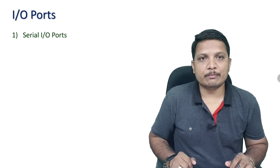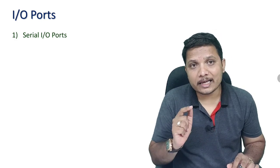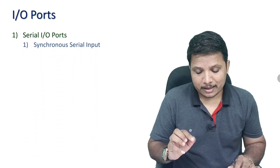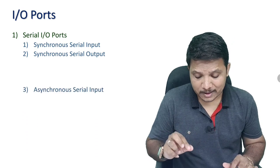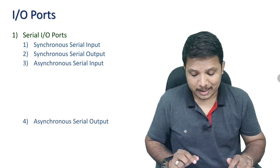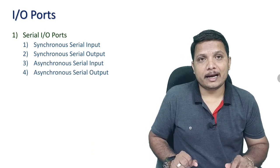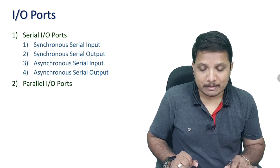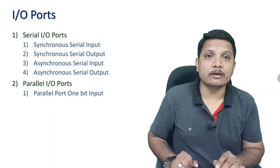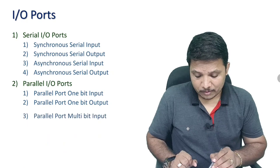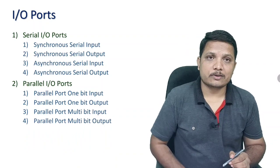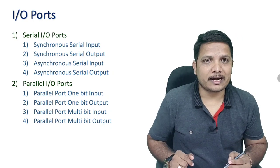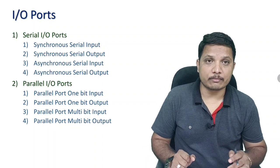Now let us see input-output ports. In serial ports, we have serial input and serial output ports with two further categories: synchronous serial input/output ports and asynchronous serial input/output ports. Next is the parallel input-output port, which includes parallel 1-bit input port, parallel 1-bit output port, parallel port with multi-bit input, and parallel port with multi-bit output.